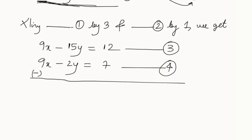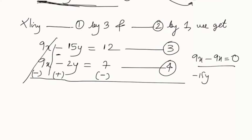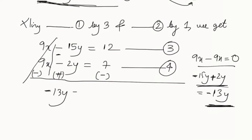Now we subtract. The sign becomes minus, so 9x minus 9x equals 0 — the x terms cancel out. For the y terms: minus 15y plus 2y. That gives us minus 13y. So we have minus 13y on the left side.